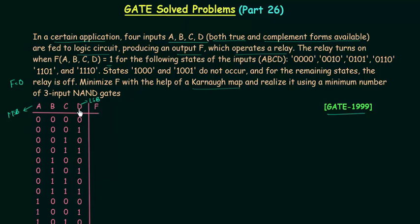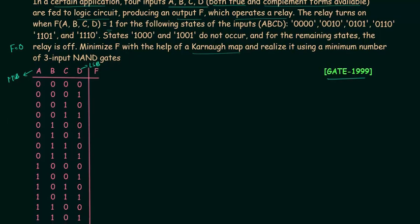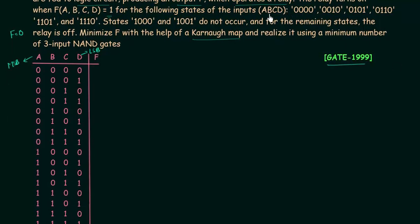As we have four variables there are 16 combinations. Now I will complete the column for F using the information given in the problem. F is equal to 1 when A, B, C, D are 0,0,0,0 — so for the first case F is equal to 1. Then for 0,0,0,1 F is equal to 1. Then for 0,1,0,1 and 0,1,1,0 F is also 1.